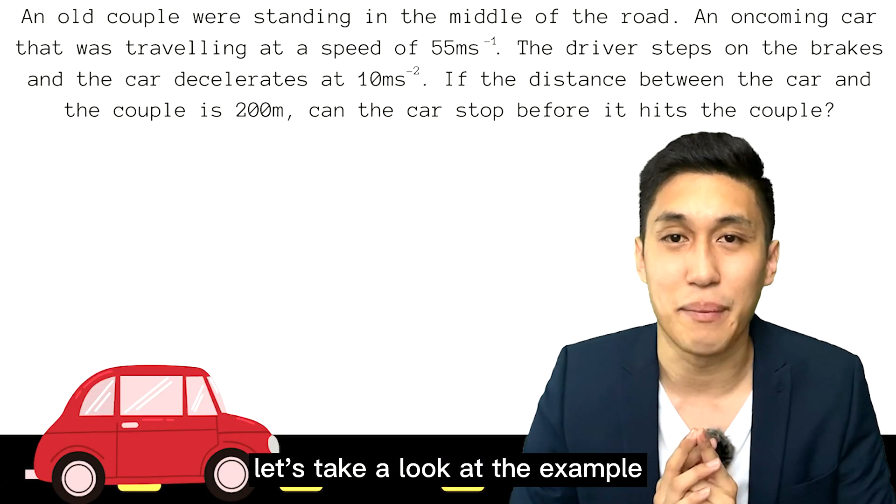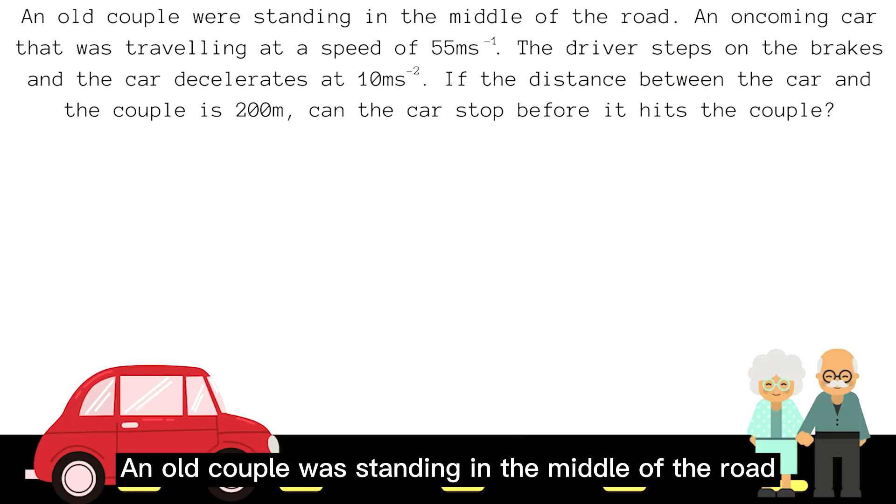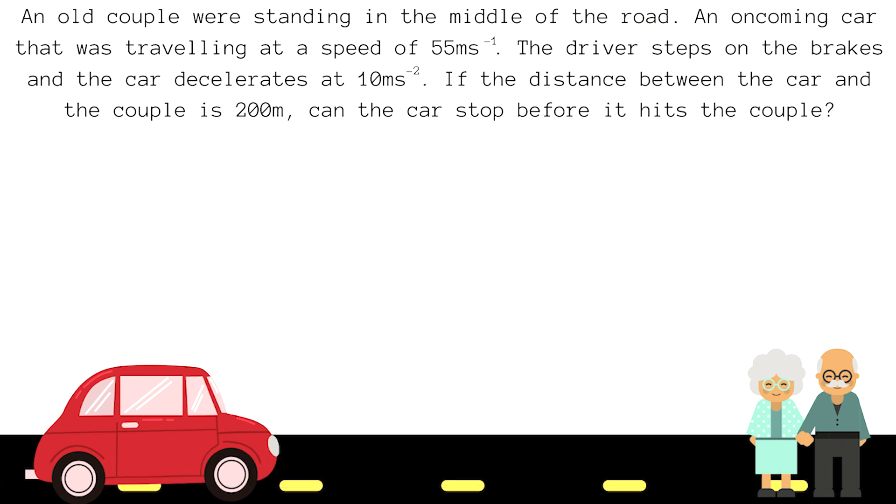Let's take a look at the example. An old couple was standing in the middle of the road. An oncoming car was traveling at a speed of 55 meters per second. The driver steps on the brakes and the car decelerates at 10 meters per second squared. If the distance between the car and the couple is 200 meters, can the car stop before it hits the couple?